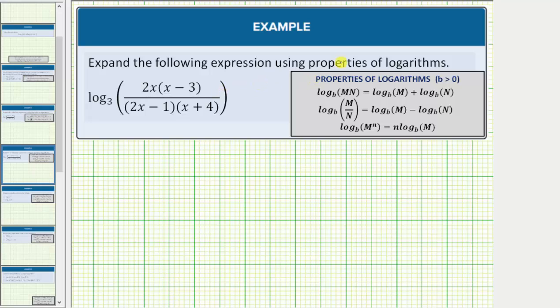We're asked to expand the following expression using properties of logarithms. We're given log base three of the product of two x and x minus three divided by the product of the quantity two x minus one and x plus four.